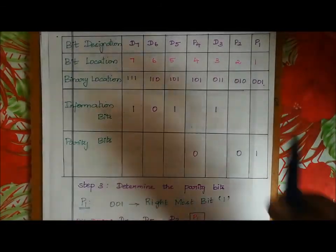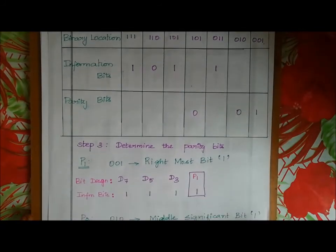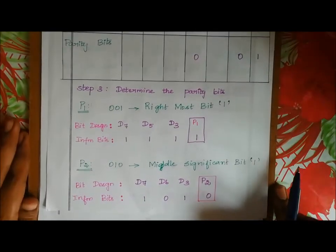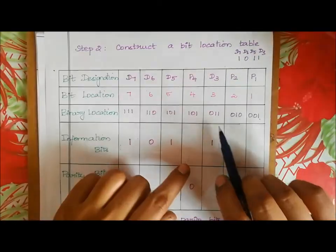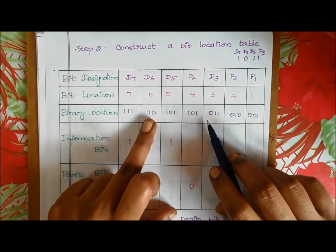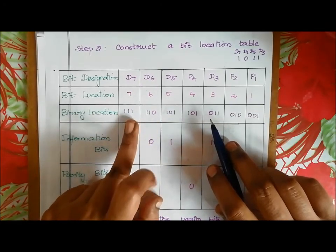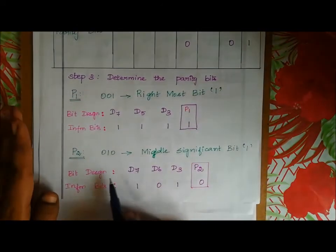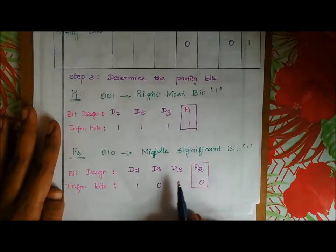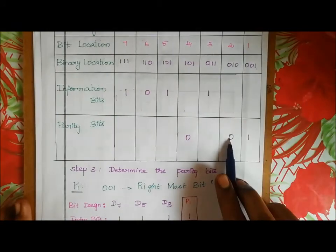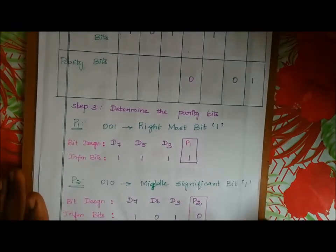For P2, look at bit positions whose binary location has middle bit = 1. Those are D3, D6, and D7. Information bits: D3=1, D6=0, D7=1. Total number of 1s is 2 — even. So P2 value is 0.